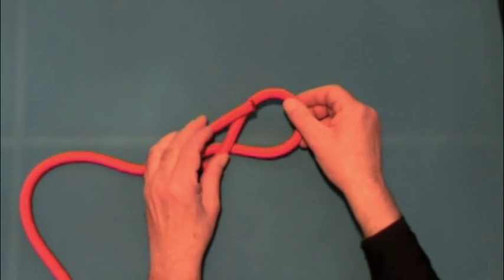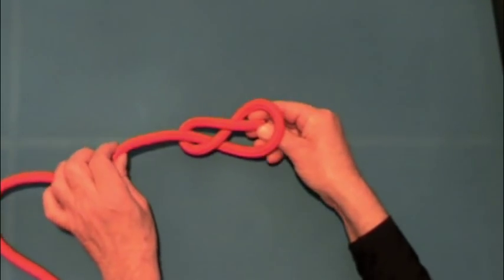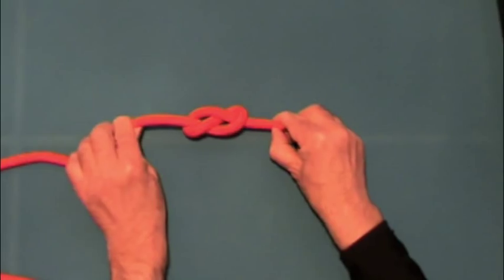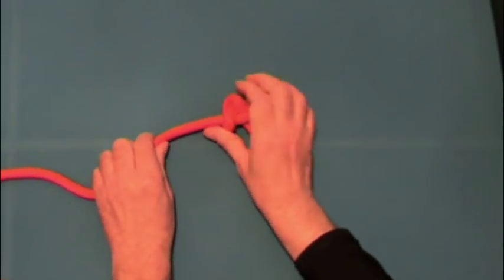Then take the end and feed it through the first loop we created. Pull it tight and there's our figure eight stopper knot.